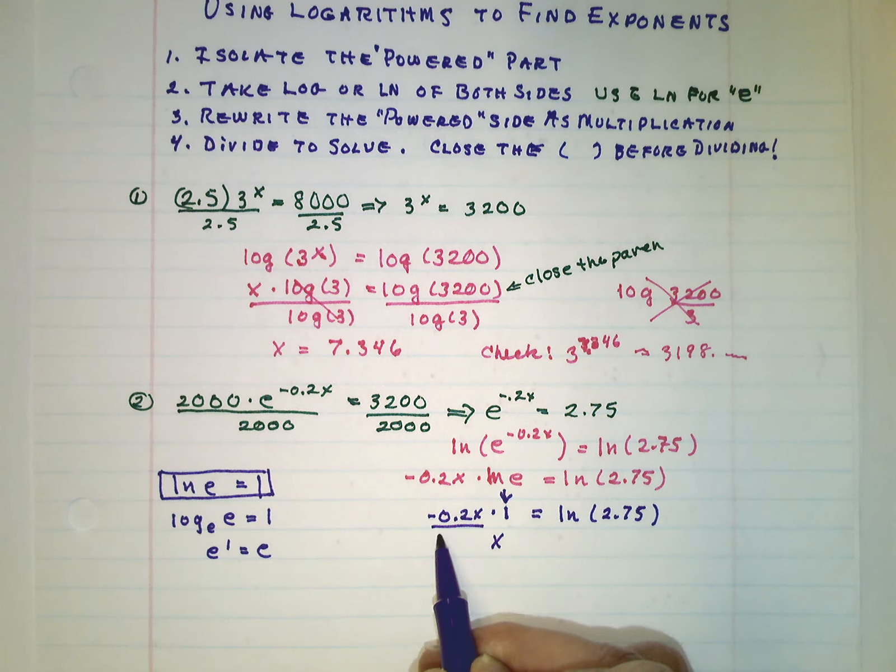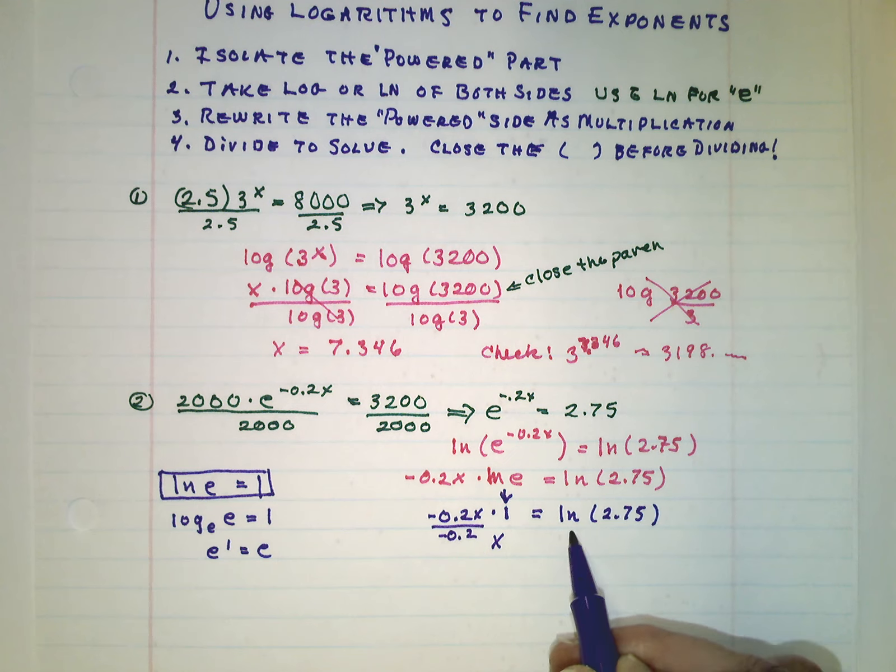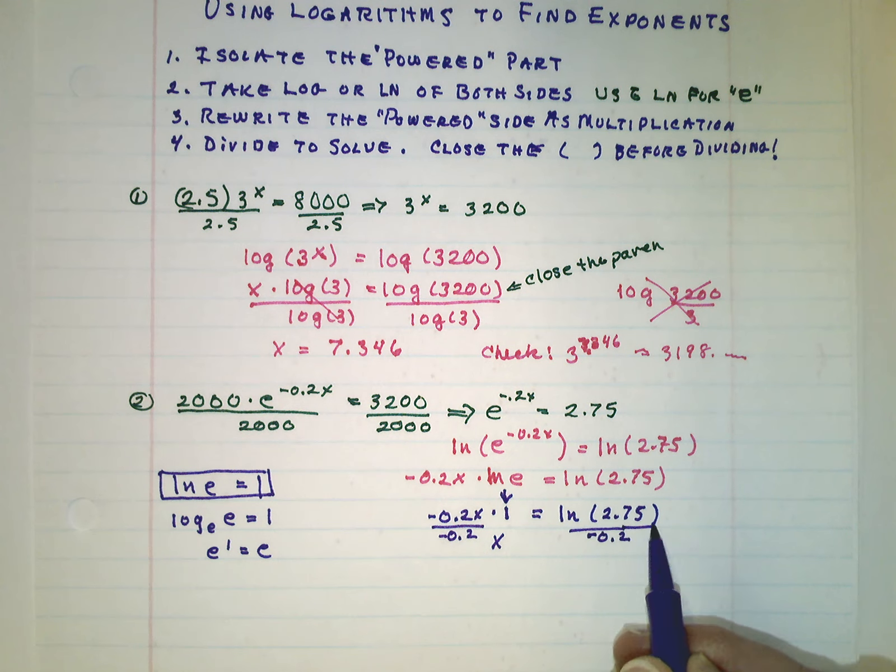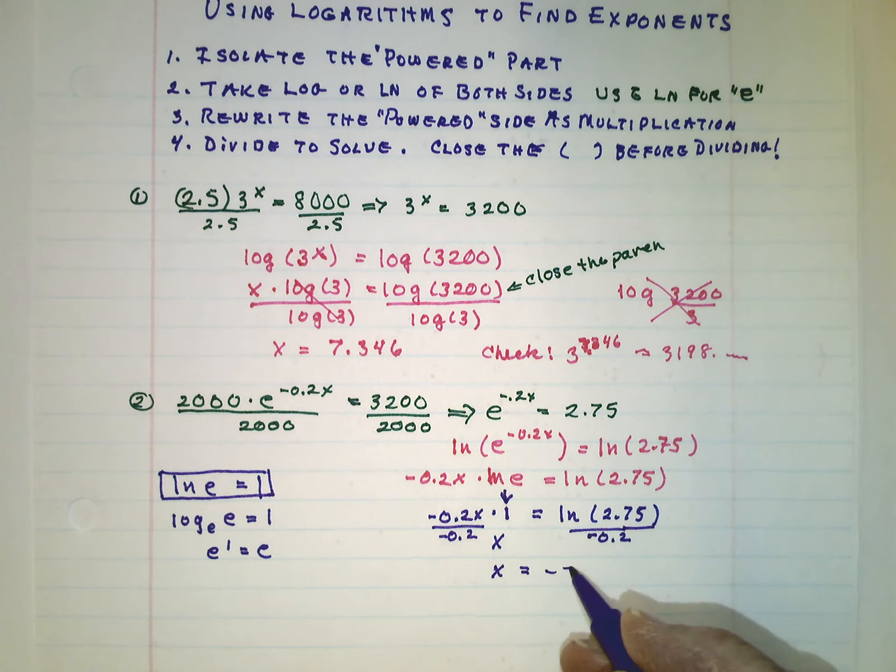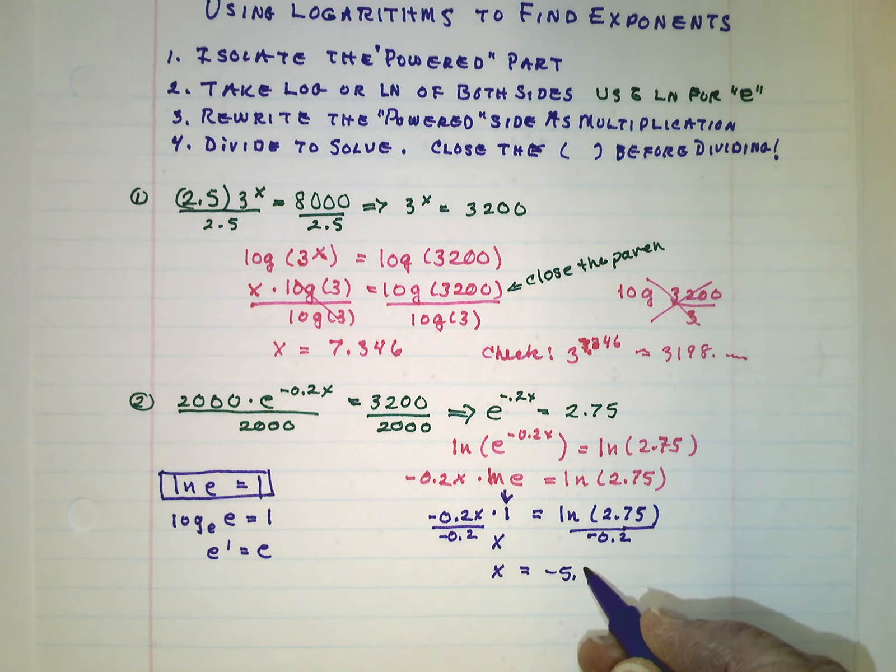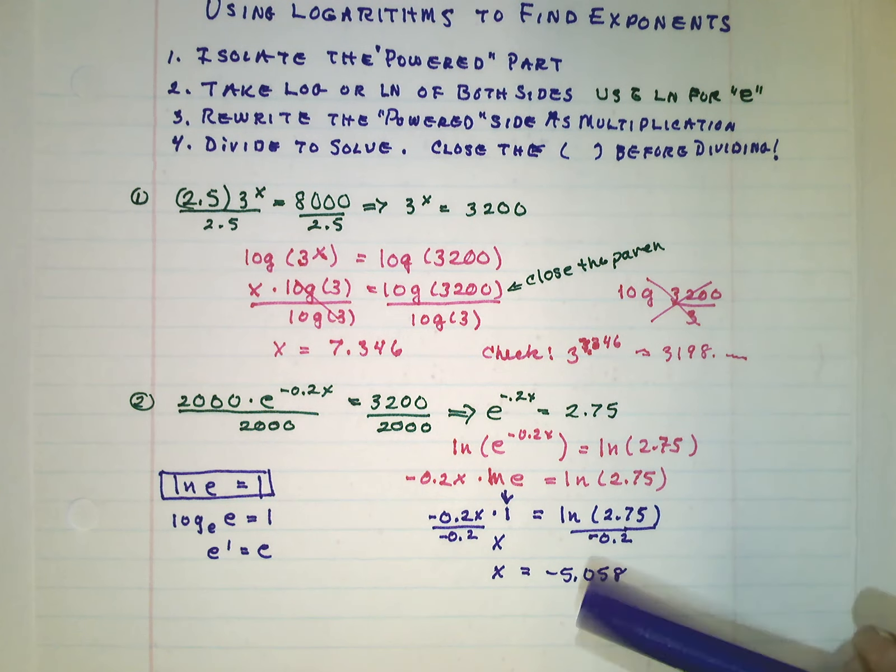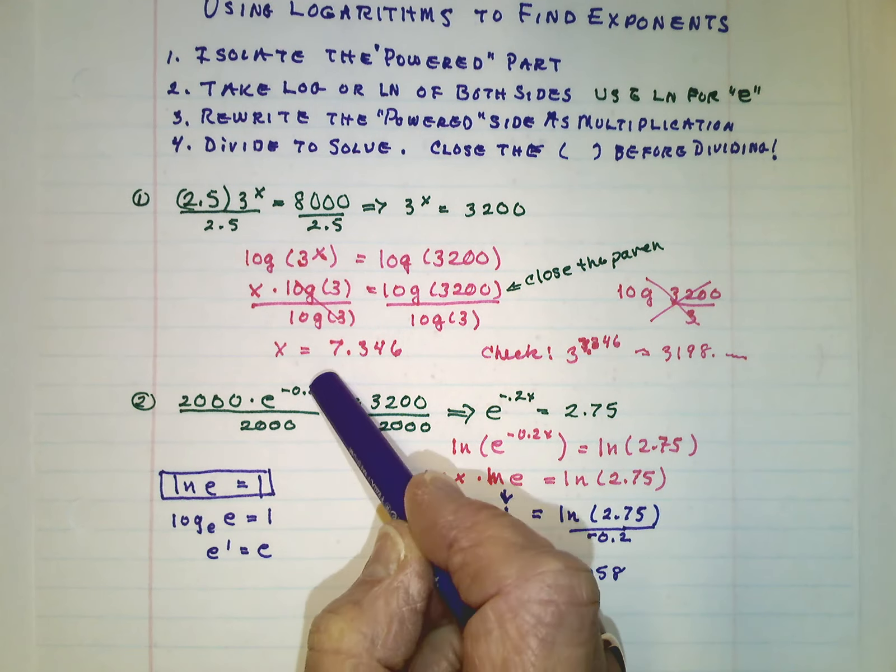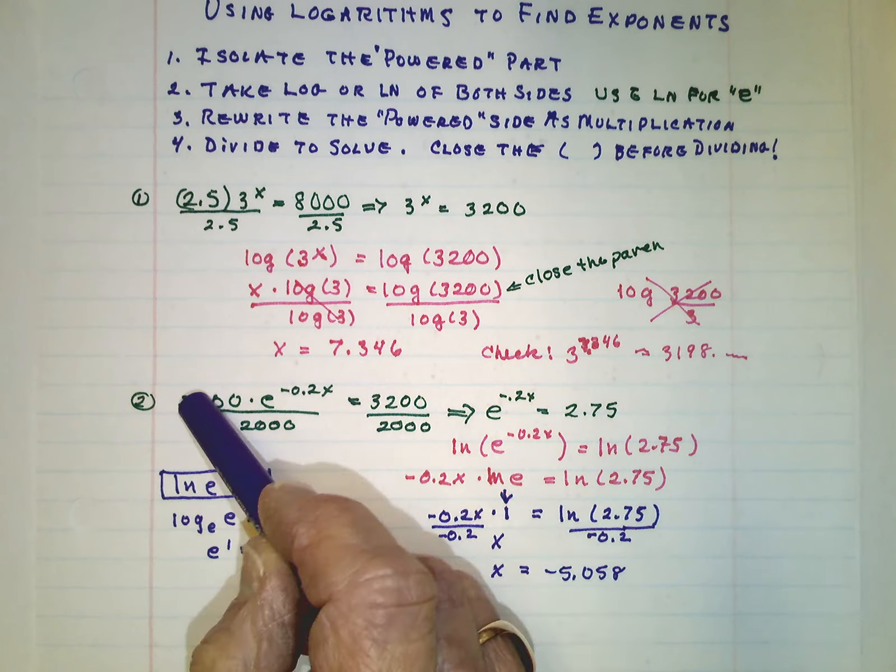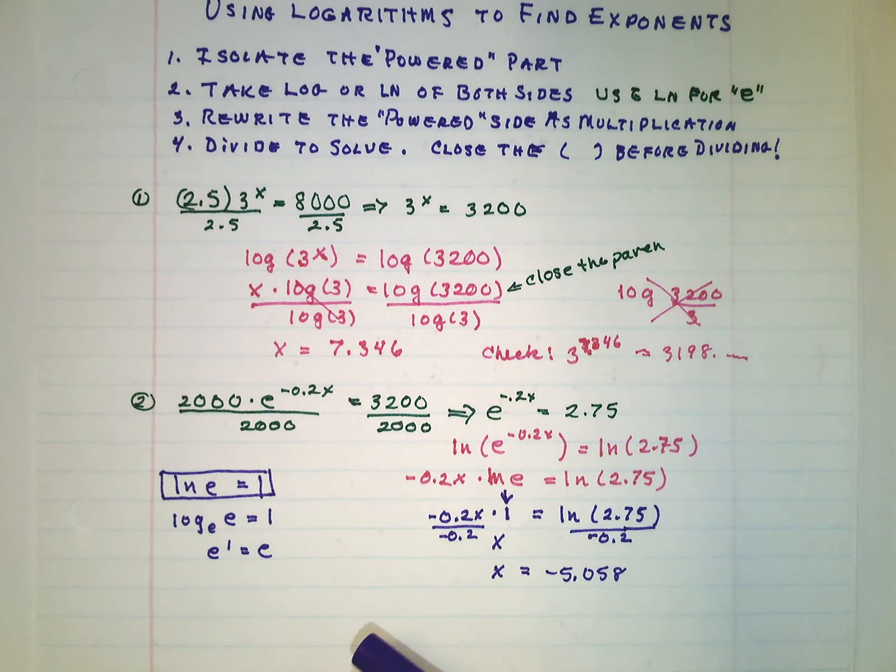And if we divide both sides by negative 2 tenths, we get the x is approximately negative 5.058 to the nearest thousandth. And once again we could check it. We could put it in here and see if what we get when we multiply it by 2,000 comes out to 3,200.